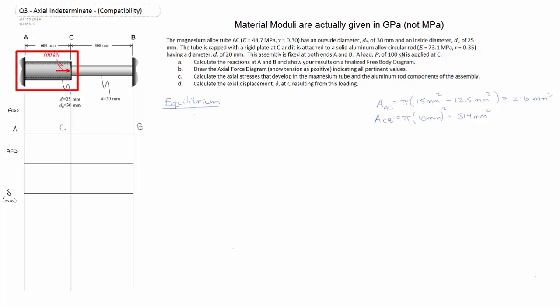We have a hollow shaft spanning between A and C which is made of magnesium and the material properties are shown. Then we have a solid aluminum rod between parts C and B, again with the material properties shown in the problem.